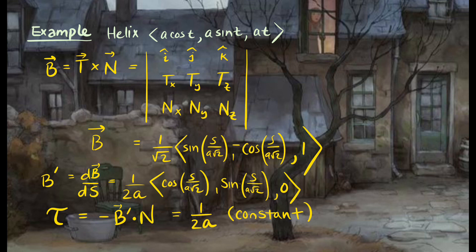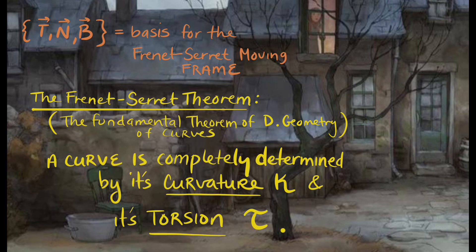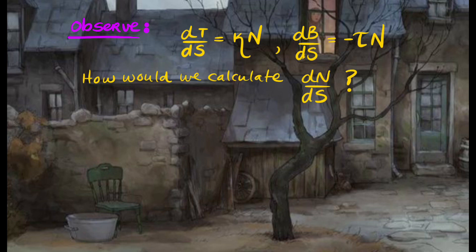Using this determinant we find the binormal vector B. Then, taking the negative of the dot product of dB/ds with N, we get a constant torsion of 1/(2a) — exactly equal to the curvature 1/(2a). For the helix as a rising circle, that makes a lot of sense. So T, N, and B form a basis for the Frenet-Serret frame, and this is essentially the theorem stating that a curve is completely determined by its curvature and torsion.